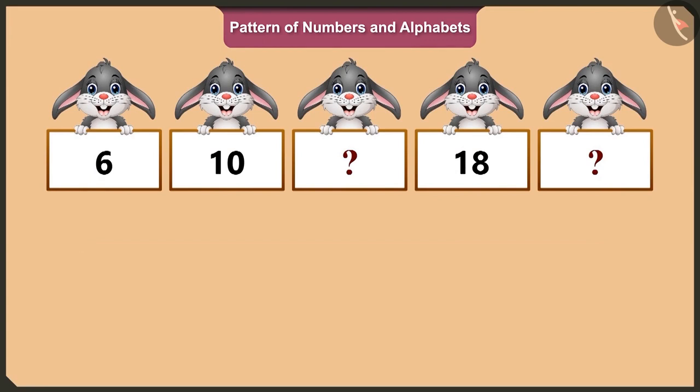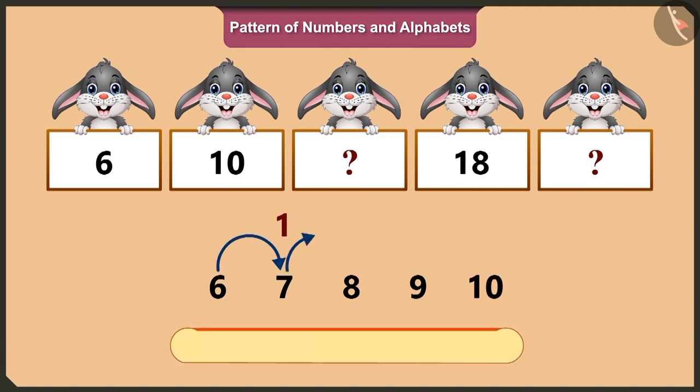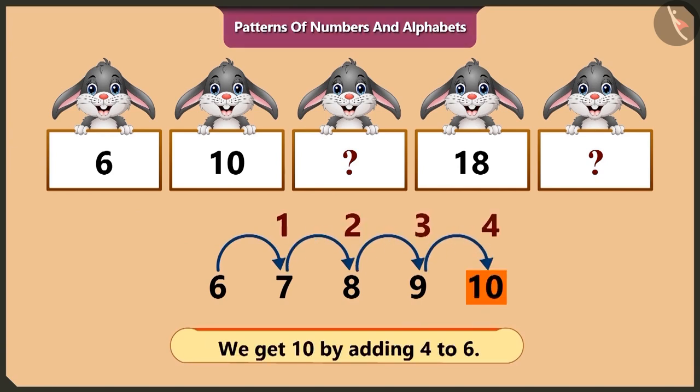Hmm. In this pattern, the numbers are listed in ascending order. As per the pattern, ten comes after six. While counting numbers after six, we have seven, eight, nine and ten. Hence, on adding one, two, three, four to six, we get ten.